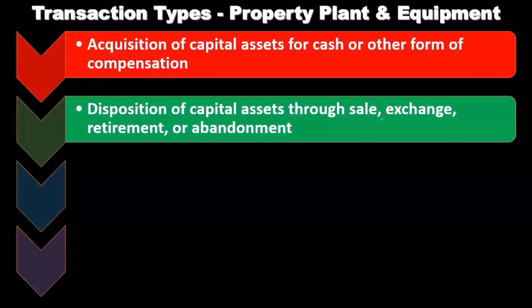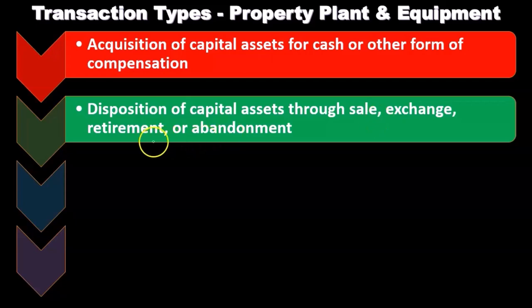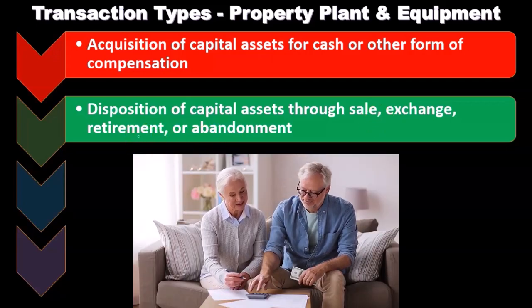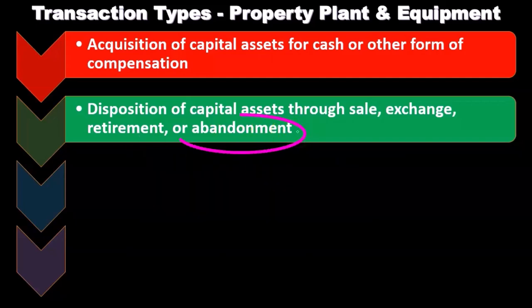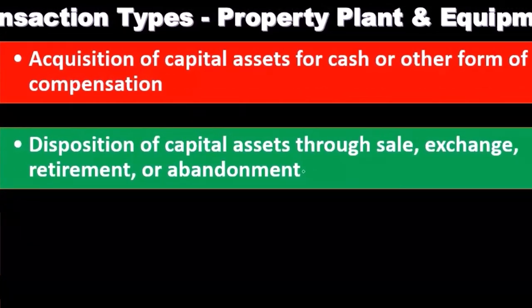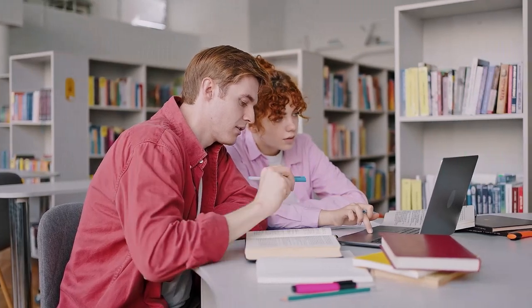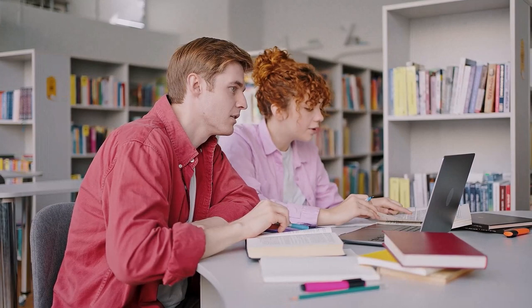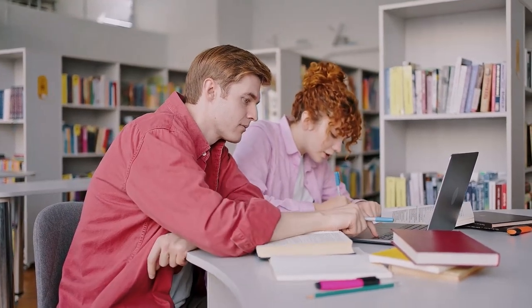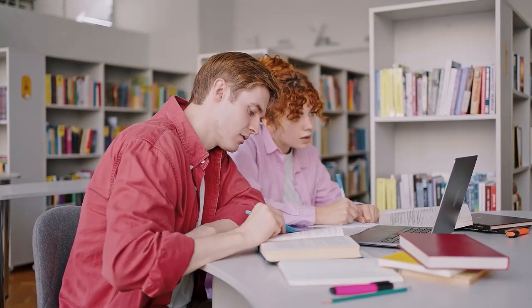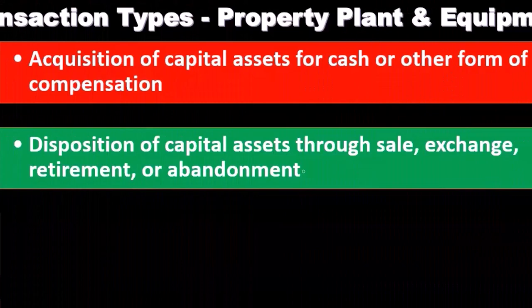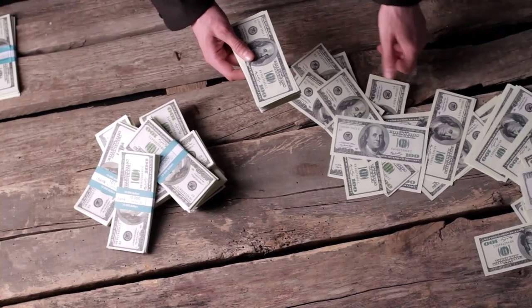An exchange can be more complex since assets are traded rather than simply sold for cash. Retirement means the asset is disposed of, and abandonment is a similar process. A key audit concern is that retirement and abandonment may have occurred but not been recorded — the asset may still be on the books, possibly fully depreciated with a book value of zero, but both the asset and accumulated depreciation should typically be removed.